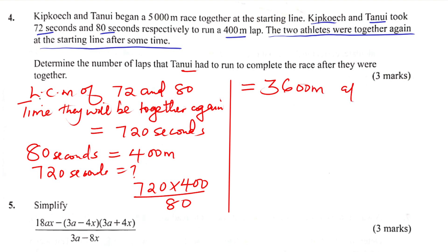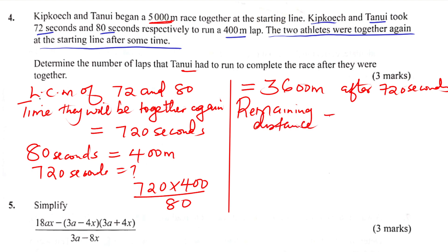That is after 720 seconds, Tanui has covered 3600m. The total distance to cover is 5000m — remember both of them had to cover a distance of 5000m. So the remaining distance is 5000 minus 3600m, which gives 1400m. So 1400m is the distance that Tanui has to cover.